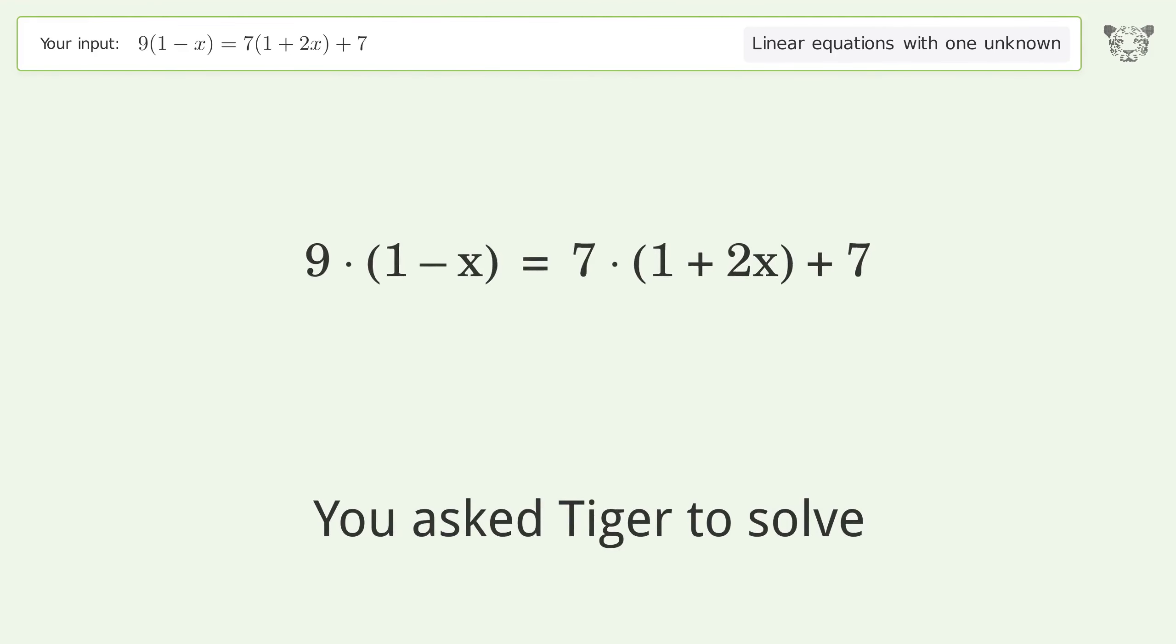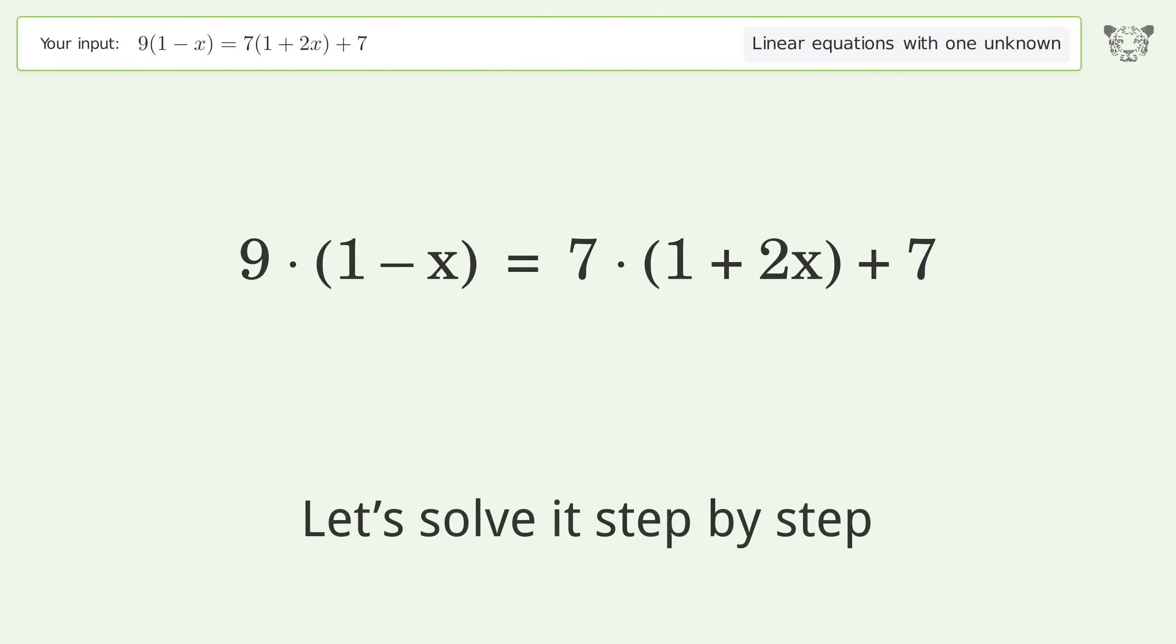You asked Tiger to solve this. It deals with linear equations with one unknown. The final result is x equals negative 5 over 23. Let's solve it step by step.